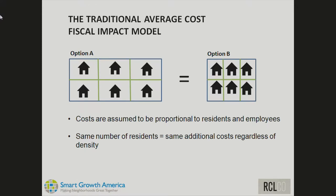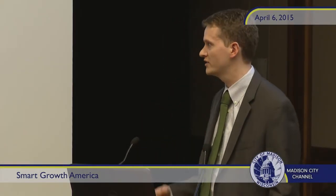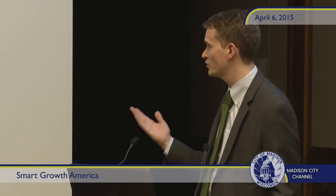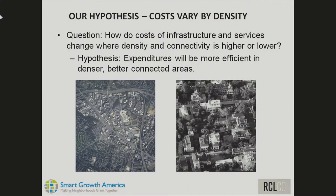That approach misses a lot of the variation in cost that we know is there based on previous studies. What we're trying to do is come up with different average costs based on the density of the development pattern. On the left you have Tyson's Corner — very sprawling, a lot of distance between places and a lot of roads per household — whereas the community on the right uses all that infrastructure much more efficiently. Our objective is to quantify what that means in terms of costs to the municipality.